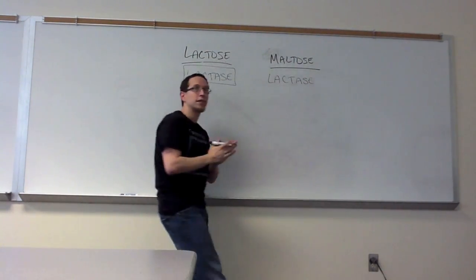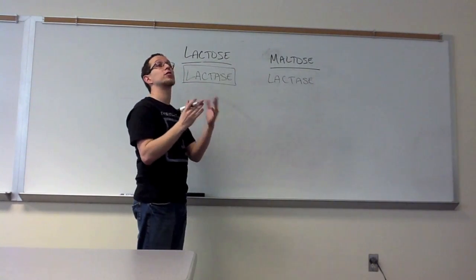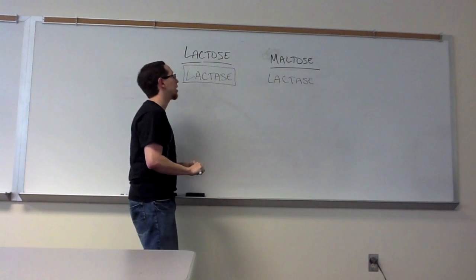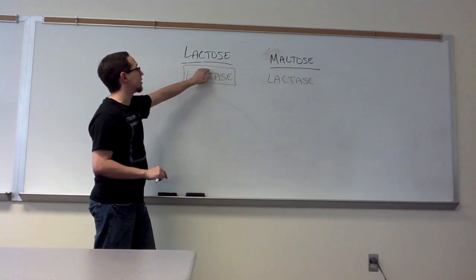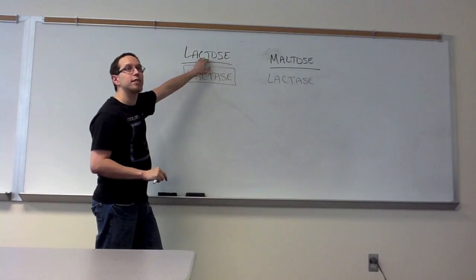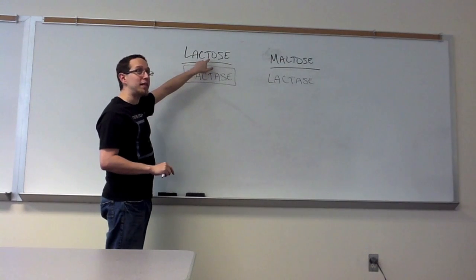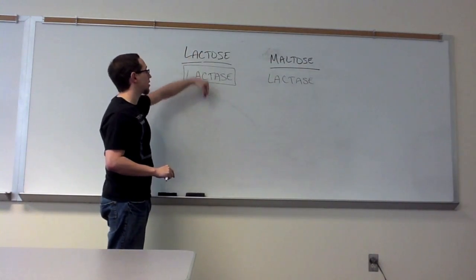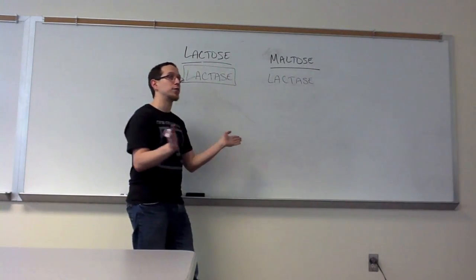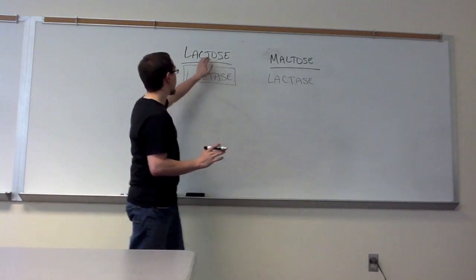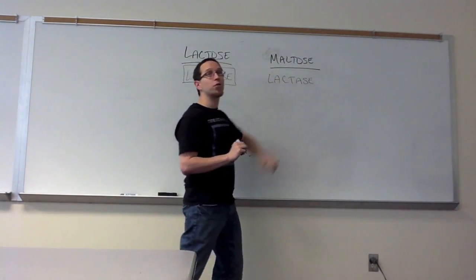So even though maltose is metabolized into two glucose molecules, and lactose only produces one glucose molecule every time its metabolism occurs, because lactase is specific for lactose, it is going to bind this substrate much more efficiently than it binds maltose. It's then going to speed up the metabolism of lactose, which means that even though maltose is in theory producing more glucose molecules every time it's metabolized, lactose is going to be metabolized at a much faster rate than maltose is.